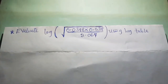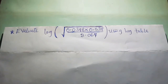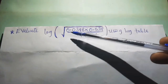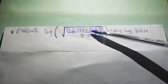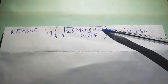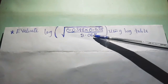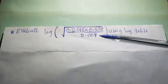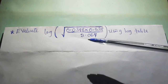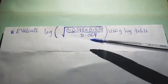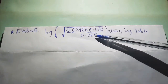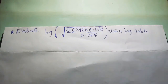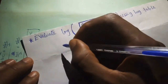In our previous lesson, we saw the various steps required to solve a logarithm of numbers less than one. In this lesson, we are going to evaluate the logarithm of the square root of 0.0348 multiplied by 0.0538, all divided by 2.067. It will be a little complicated because it combines numbers less than one and a number greater than one.